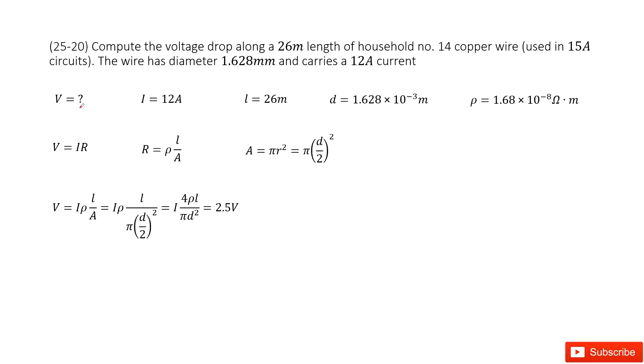So we write it down. V is a question mark. We are interested in finding V. The I is current. Now let's see some quantities about this wire.